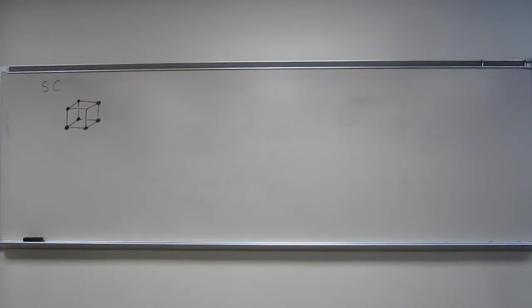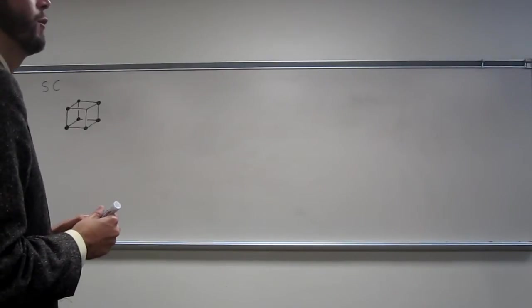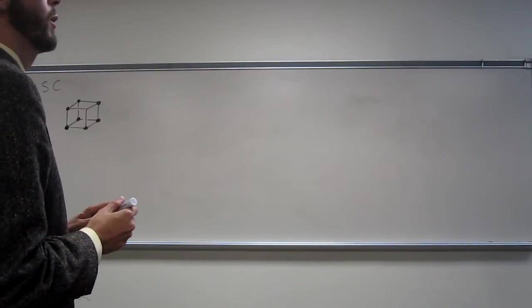So, the next one says polonium metal crystallizes in a simple cubic unit cell with the edge length of 334 picometers. What is the density of polonium in grams per cubic centimeter?